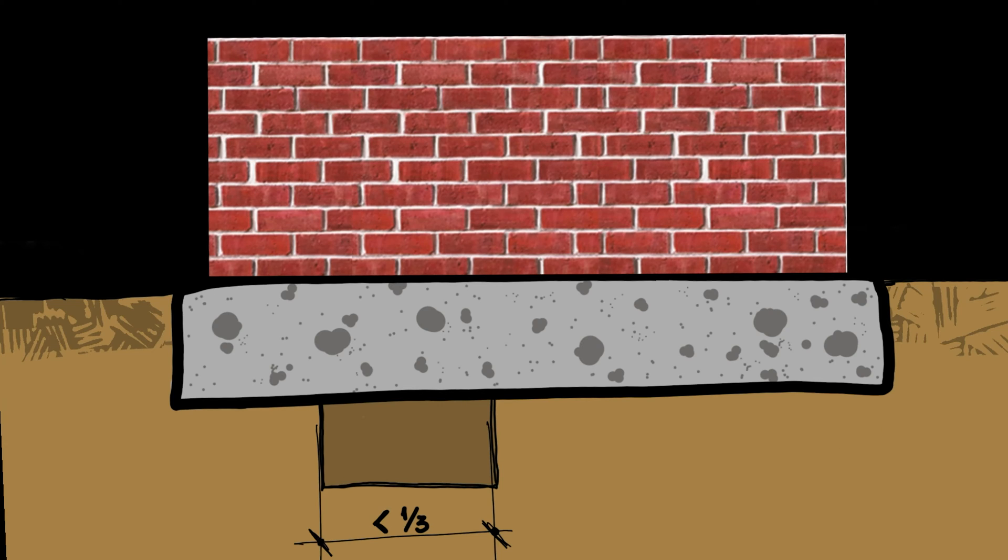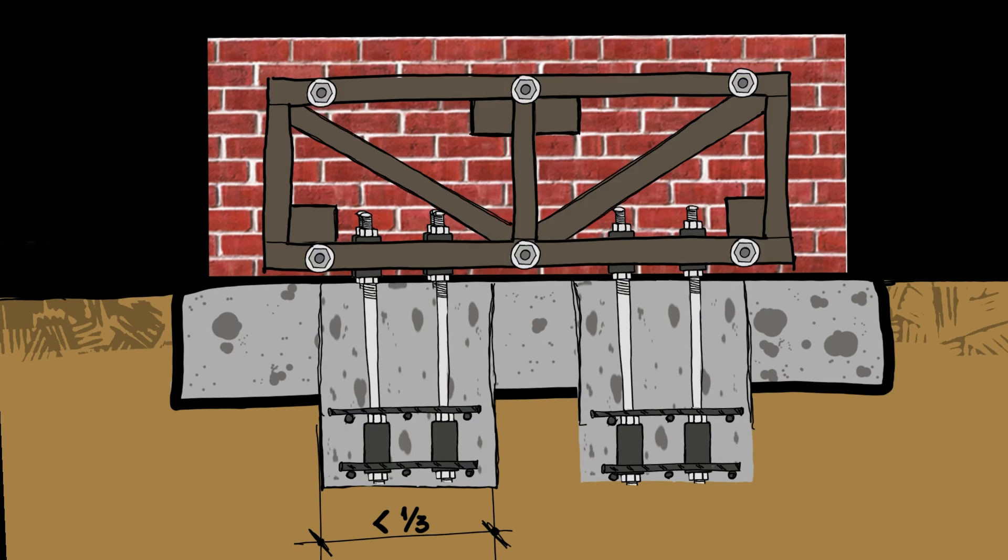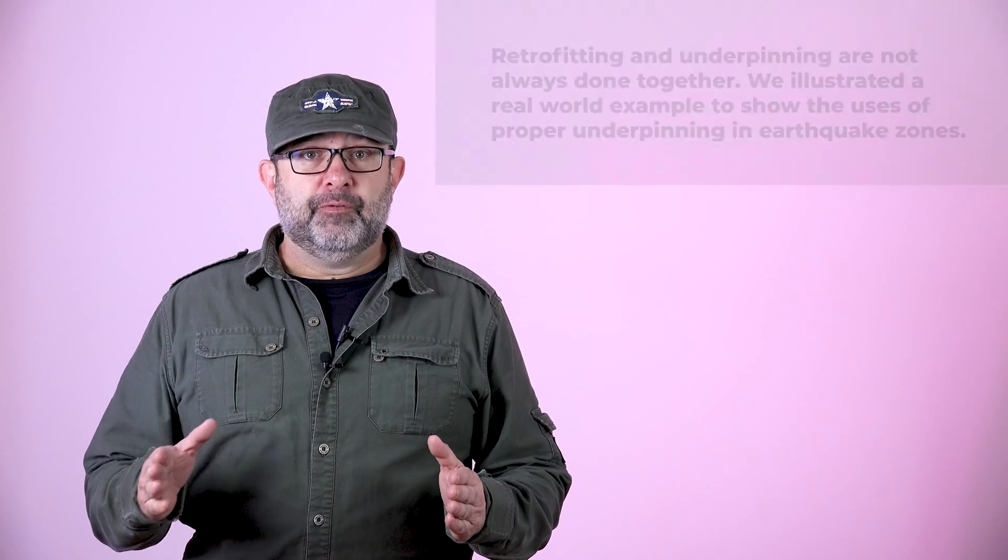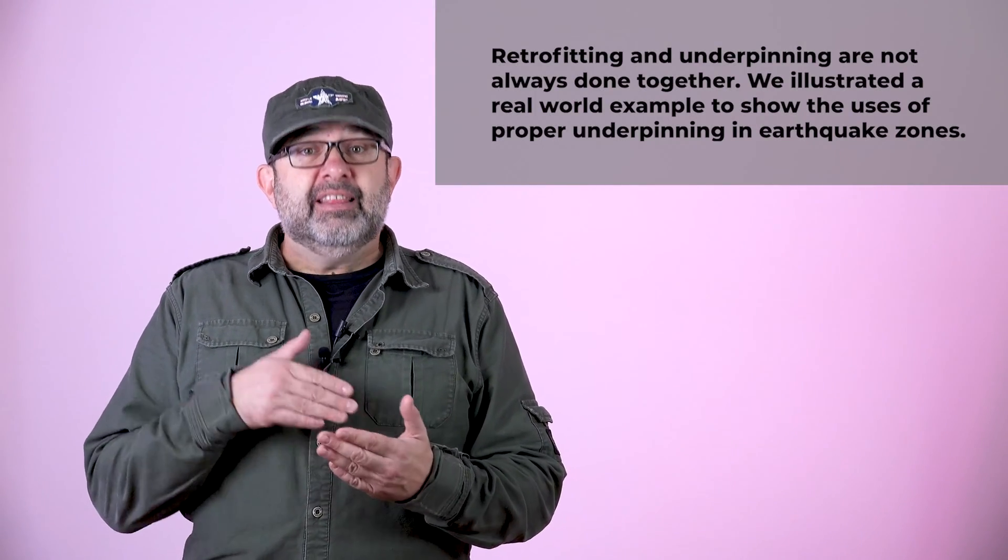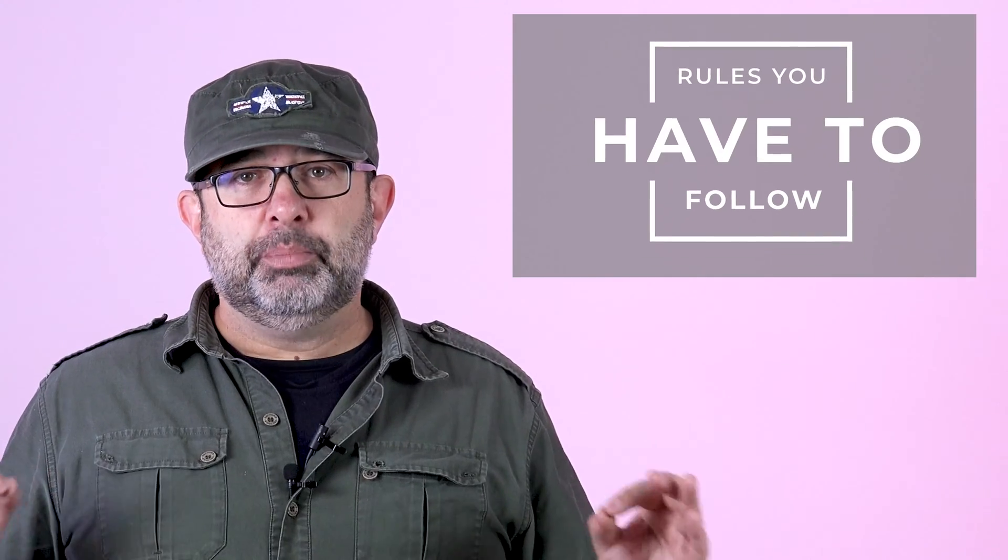In our example, we will also be introducing retrofitting systems to the underpinning to make the building stronger and better resist the next potential earthquake. This is an additional step of reinforcement that we are using in this example of underpinning only. Here are the most important rules.